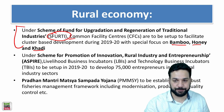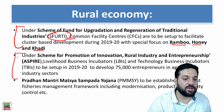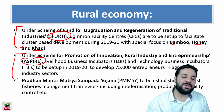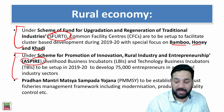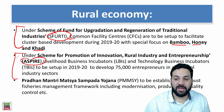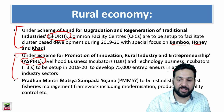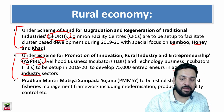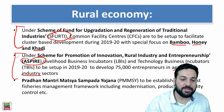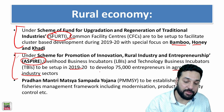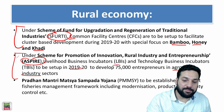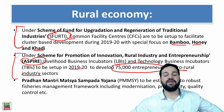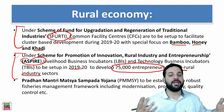Under the ASPIRE scheme, which promotes startups in agro and rural industries, livelihood business incubators and technology business incubators are to be set up. The target for 2019-20 is to develop 75,000 new entrepreneurs under the ASPIRE scheme.